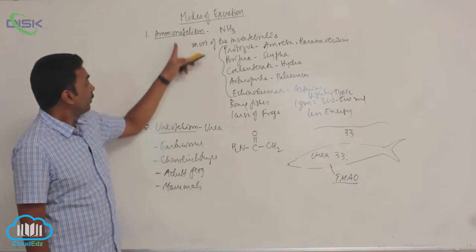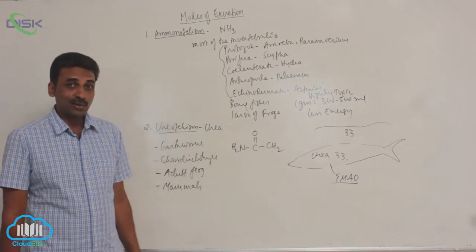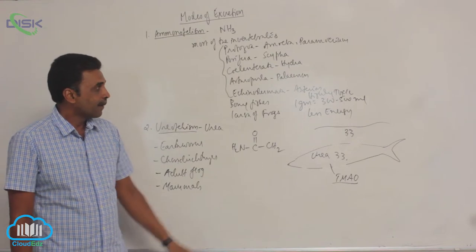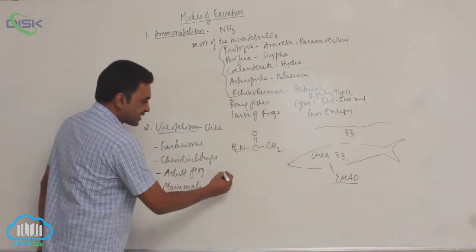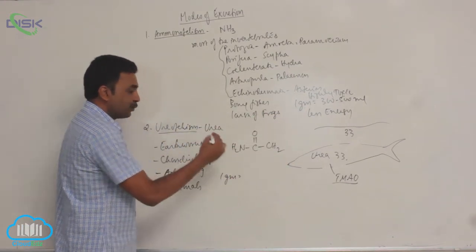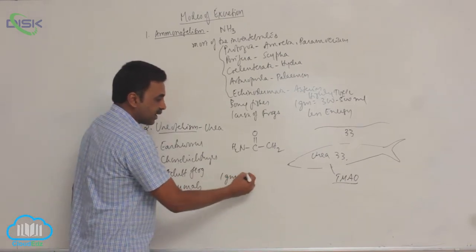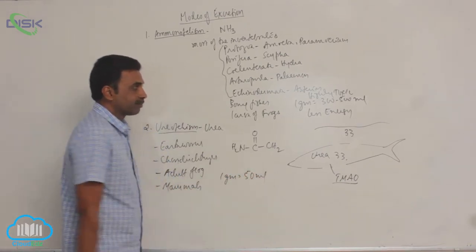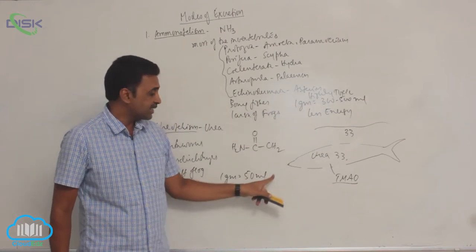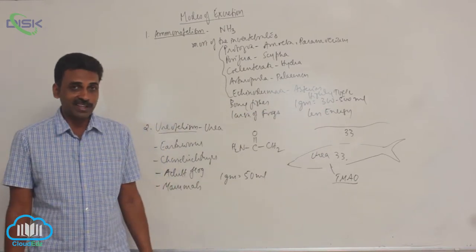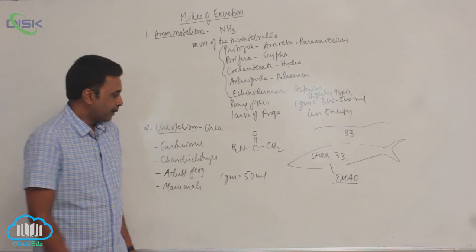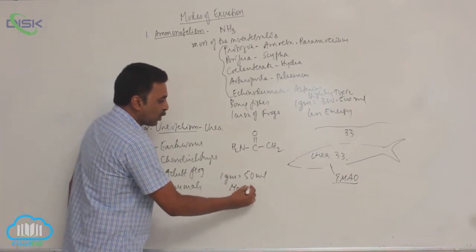When compared to ammonia, urea is less toxic. For excretion, one gram of urea requires around 50 ml of water, meaning less water is sufficient compared to ammonia, but requires more energy.